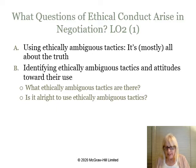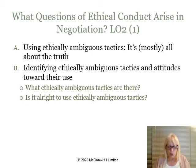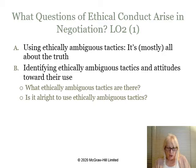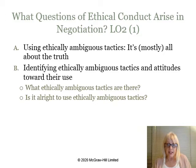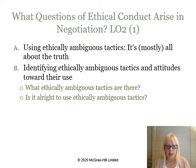Deception in negotiation can rise to the level of legally actionable fraud. Of the six categories of ethically ambiguous tactics, two — use of traditional competitive bargaining tactics and emotional manipulation — are viewed as generally appropriate and likely to be used. These tactics, while mildly inappropriate, are nevertheless seen as effective in successful distributive bargaining. The other four categories are generally seen as inappropriate and unethical: misrepresentation, misrepresentation to an opponent's network, inappropriate information gathering, and bluffing.